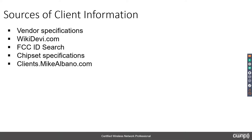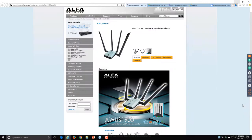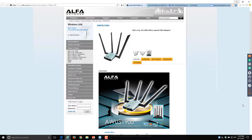Now let's talk about the five sources of client information. We have vendor specifications, a site called WikiDevi, FCC ID searches, chipset specifications, and clients.mikealbano.com — a nice resource from Mike Albano. Let's take a look at these sources, starting with the Alpha AWUS 1900 adapter we saw an internal shot of earlier.